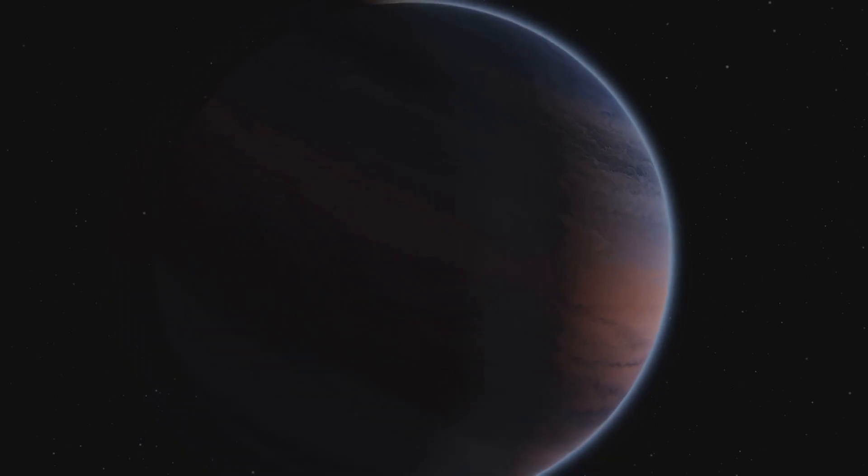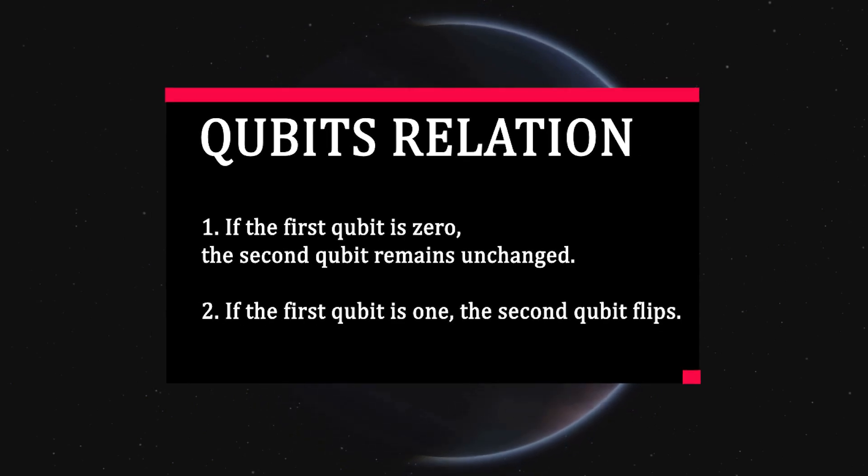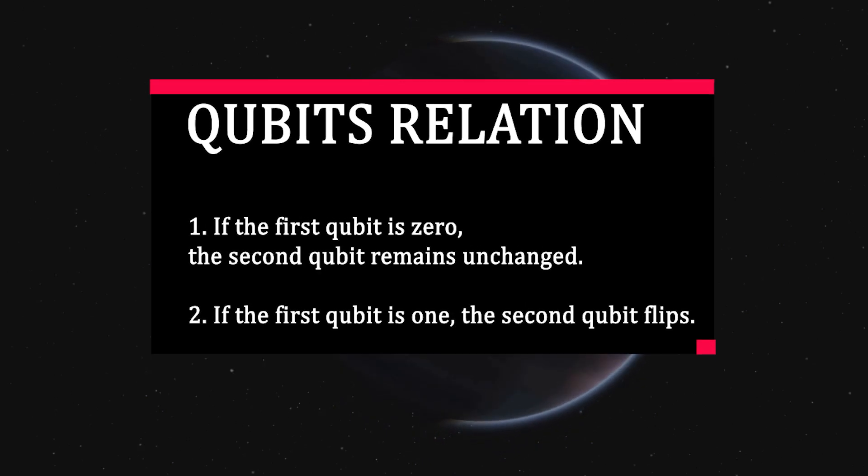Number two: Entanglement in logic. In classical logic, each bit is independent. In quantum computing, however, qubits can be entangled, meaning measuring one qubit instantly influences the state of the other, even across great distances. By using gates like CNOT, we can create relationships between qubits. For instance, if the first qubit is zero, the second qubit remains unchanged. If the first qubit is one, the second qubit flips. This shared, correlated behavior is a key reason quantum systems can perform certain tasks in parallel and more efficiently than classical systems.